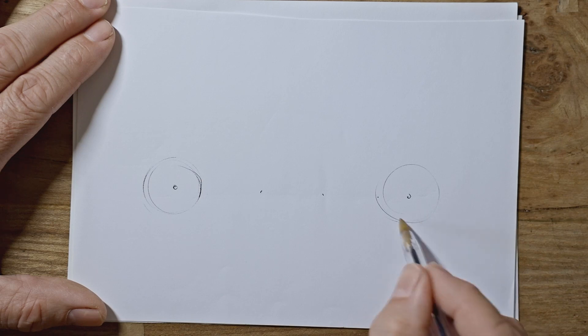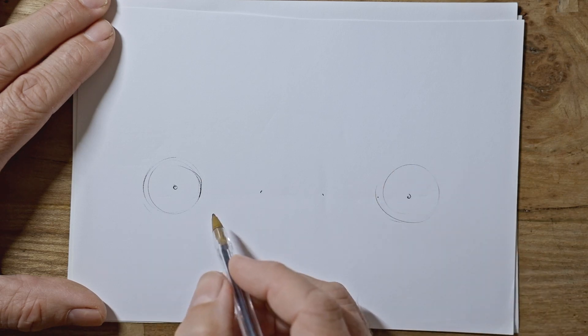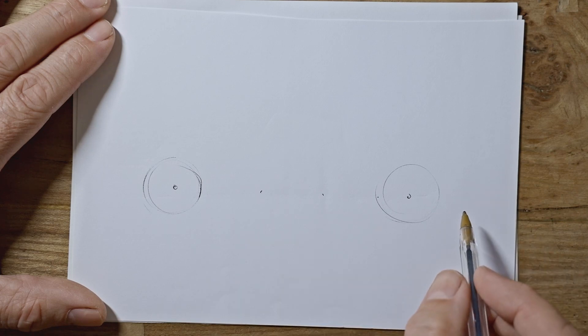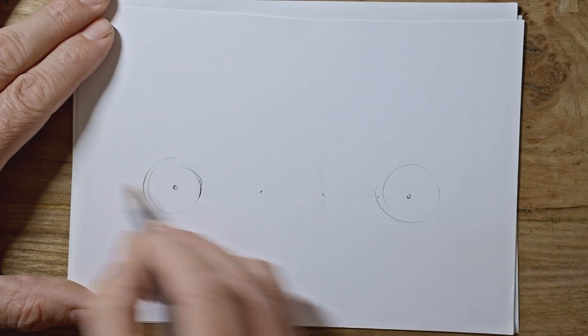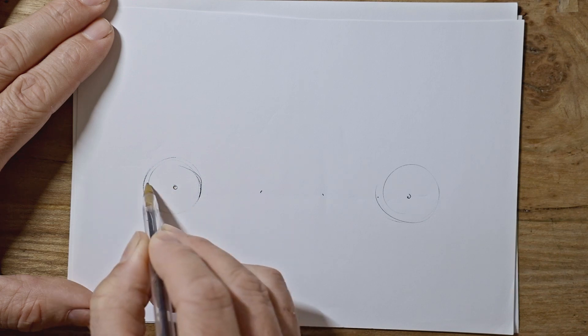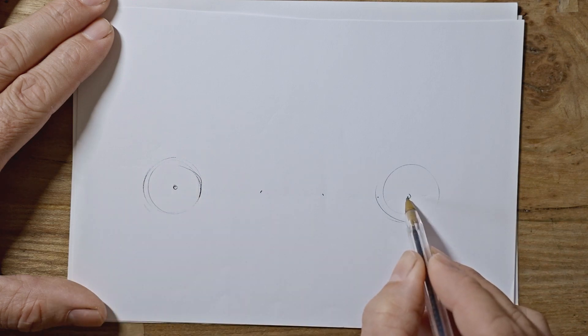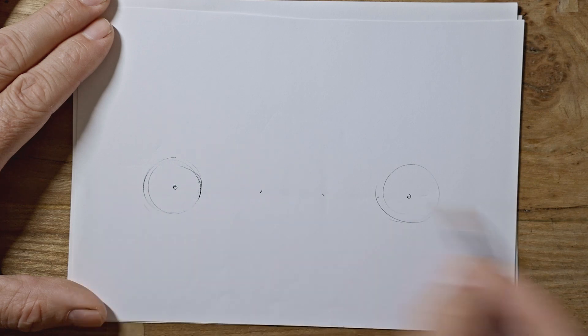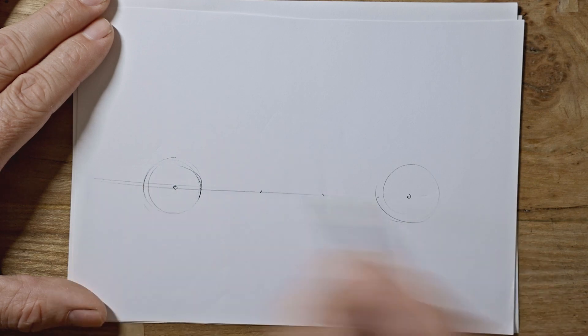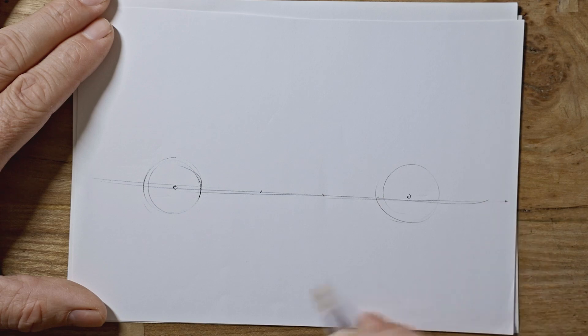So we're literally only going to see this bottom edge here, so don't worry about getting it perfect, we just need to know where it is. Next we need a nice line that's almost straight, that goes through the front wheel just above the middle, through the back wheel just below the middle, and extends both ends, something like that.